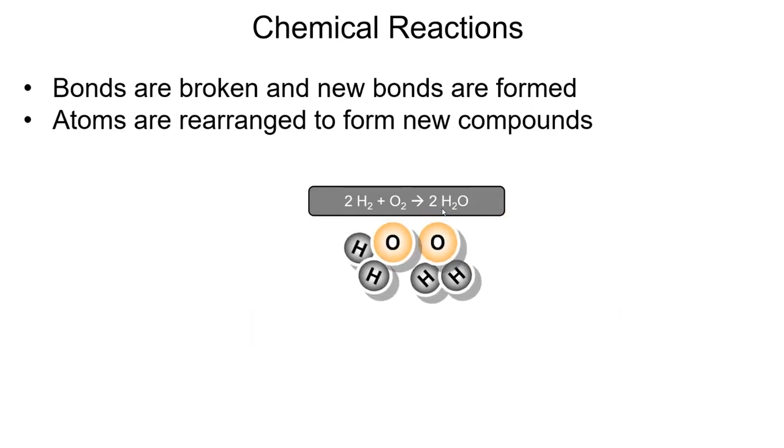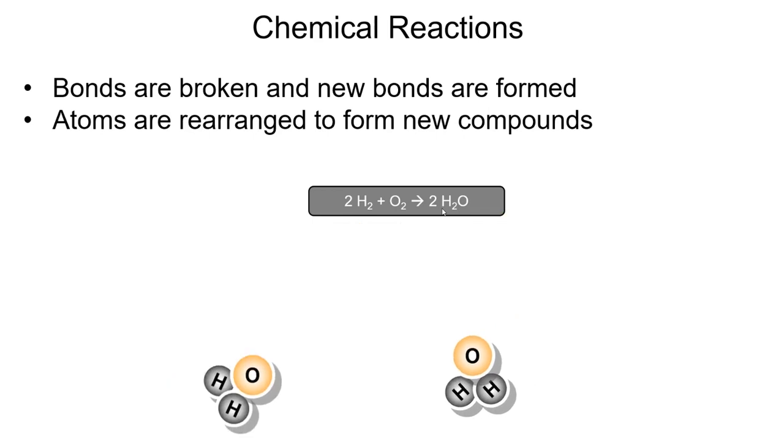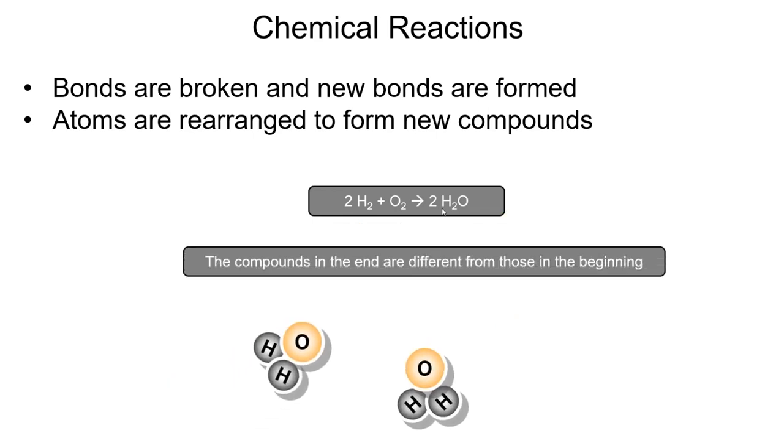Old bonds are broken, new bonds are formed, and the products have totally different properties from the compounds that they started from, from the reactants where hydrogen and oxygen which are gases at room temperature and the product water is a liquid at room temperature. So they have new physical and chemical properties.